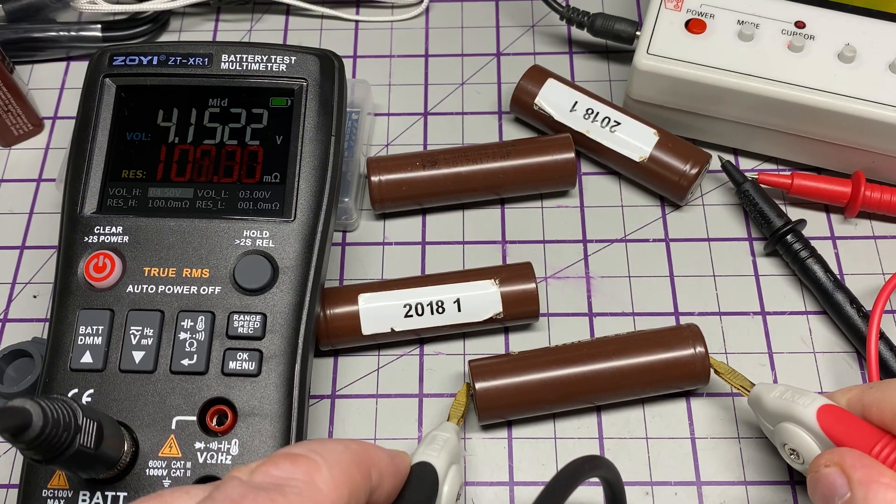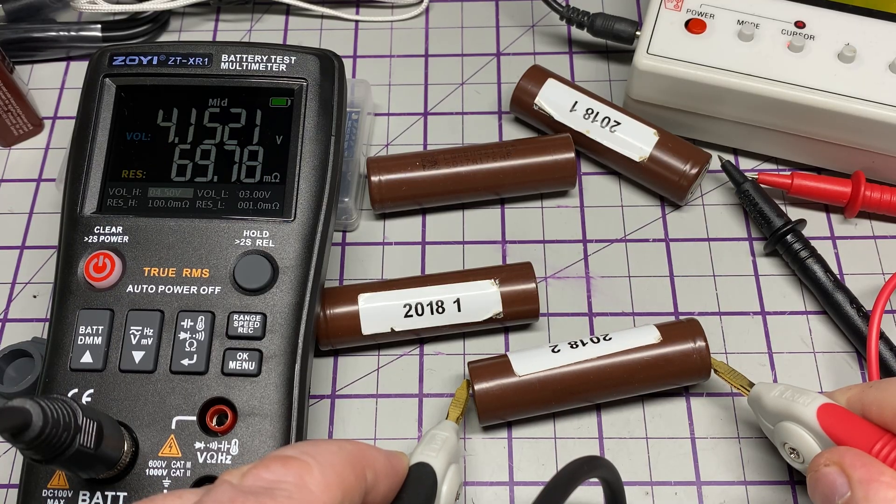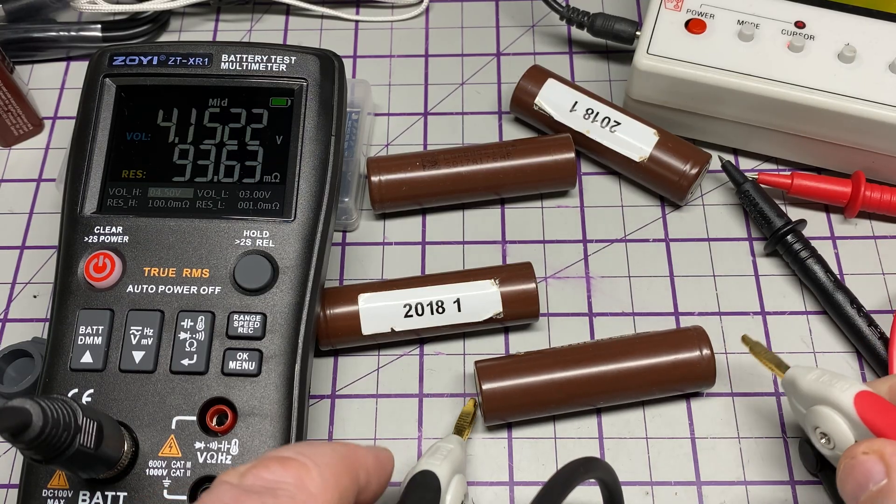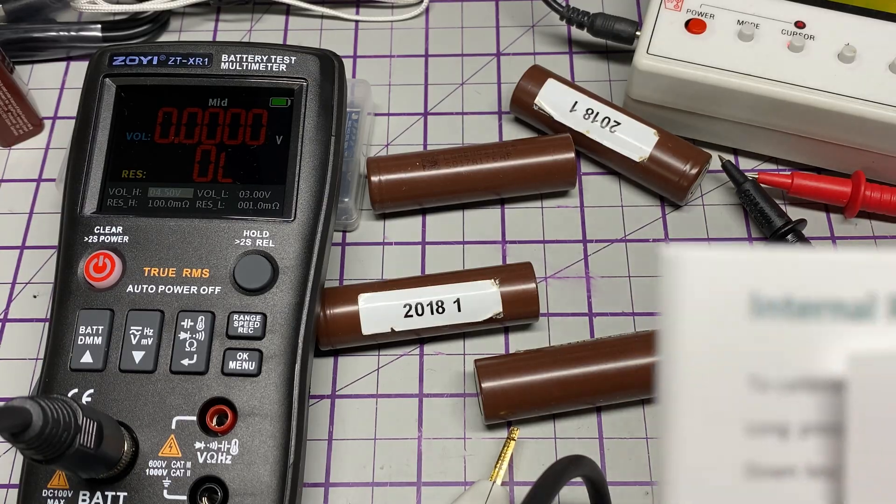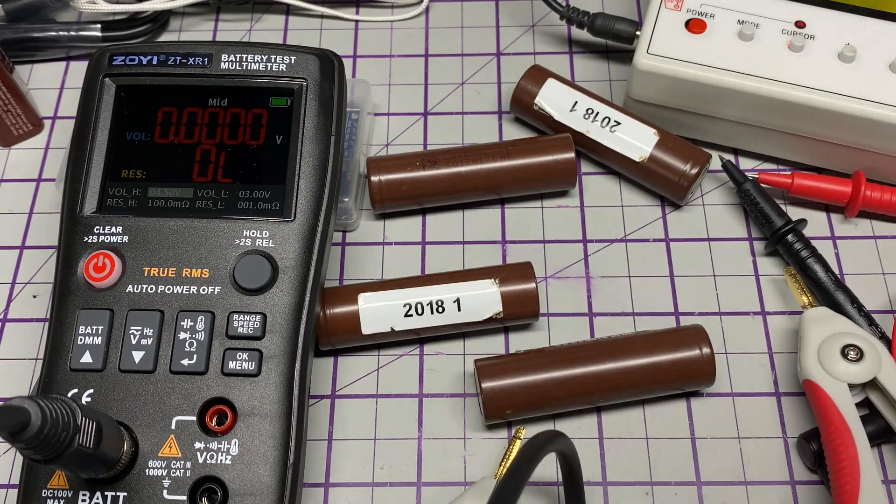We're on the mid setting here where there's fast and slow settings for the reading. I found that the mid is the best balance. I think the book says 20 to 90, let's open the book and have a look.